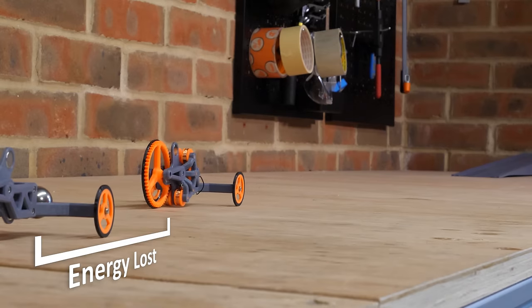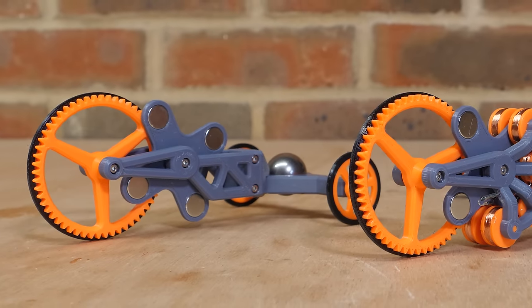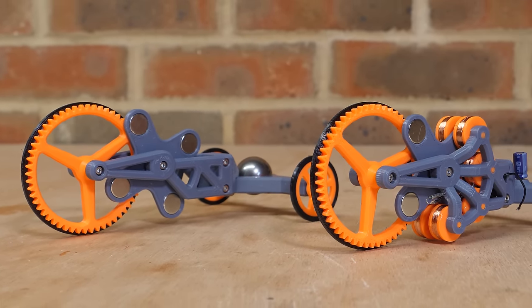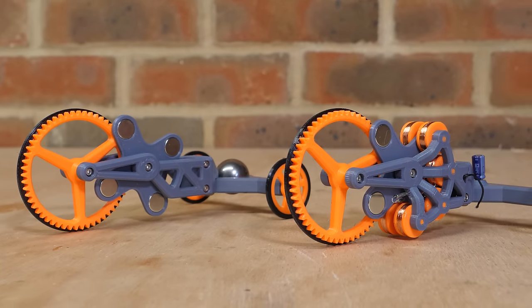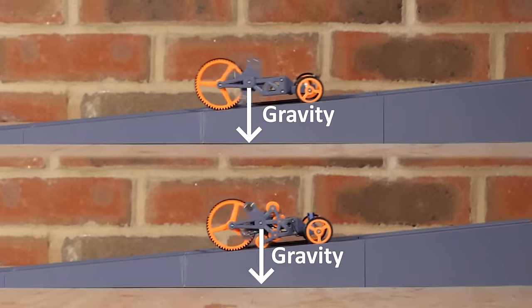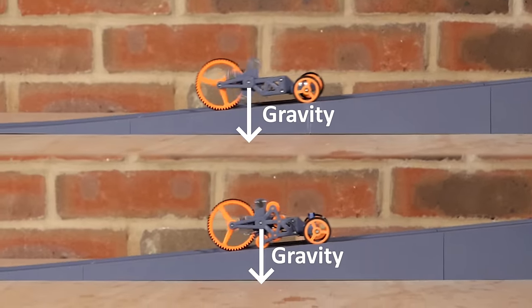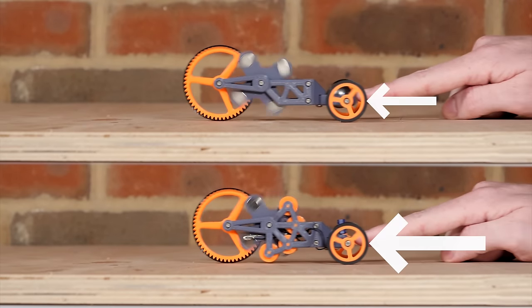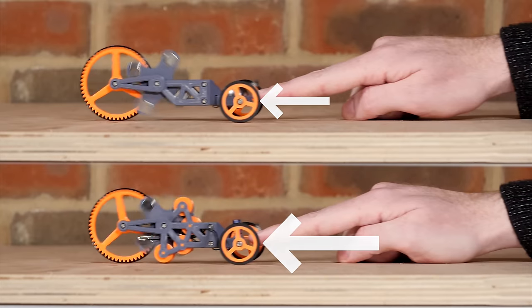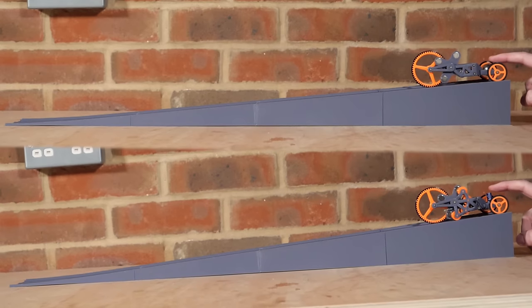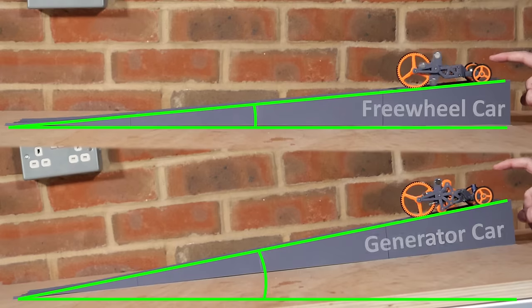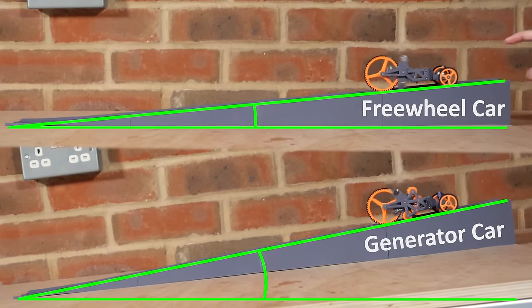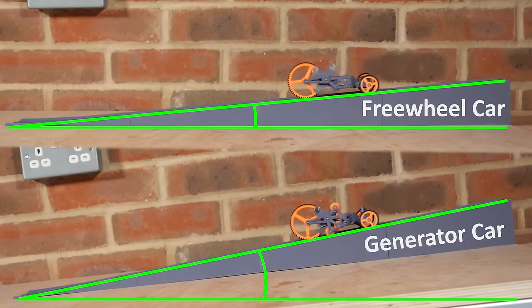So if the ramp test shows that adding a few coils, magnets and a capacitor doesn't gain an advantage over a three-wheeling car, why does the push test show otherwise? The main difference between these tests is the force that's applied to each car. So in the ramp test, there is a constant force acting on each car due to gravity. However, with the push test, the generator car requires more force to get it up to the same speed. And this would be like re-running the ramp test, but the generator car gets a steeper decline, so they both leave the ramp with the same kinetic energy. Which makes it far clearer why the generator car travels further.